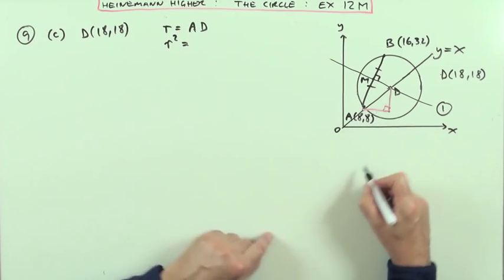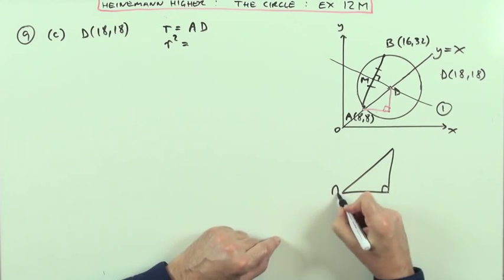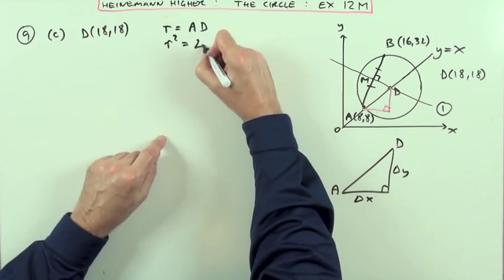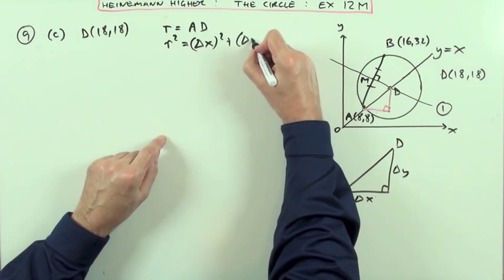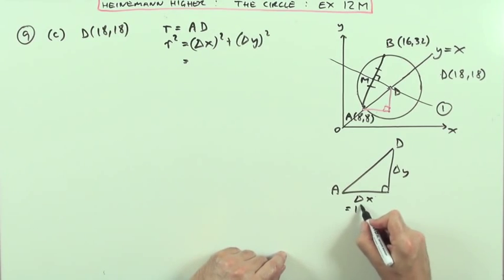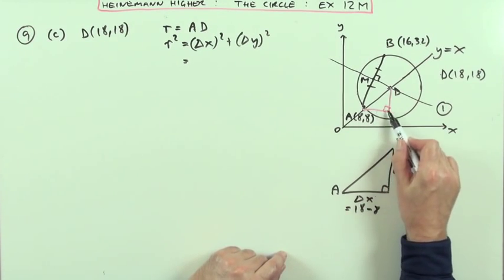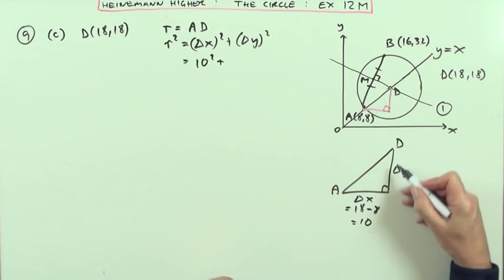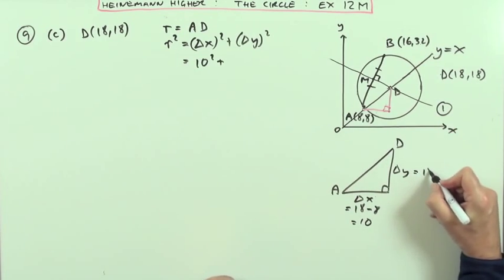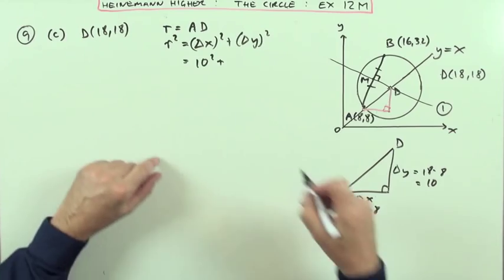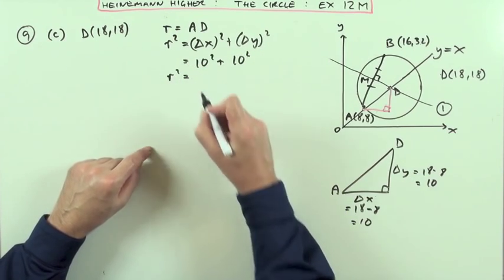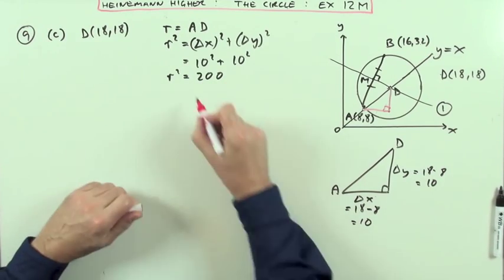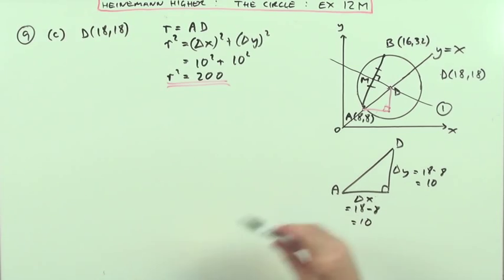How do you work out that distance from A to D? I've got the difference in x squared and the difference in y squared. The difference in x is 18 - 8, which is 10. So that's 10² plus the difference in y, 18 - 8, which is also 10. Plus 10². So r² is going to be 100 + 100 = 200.